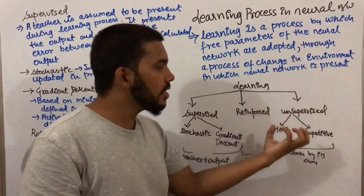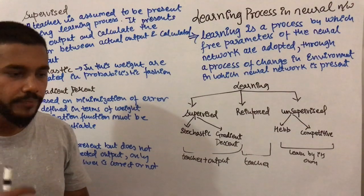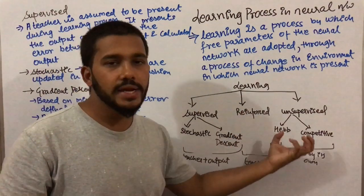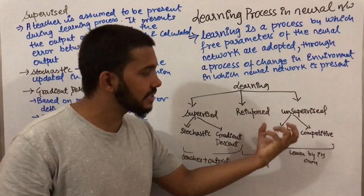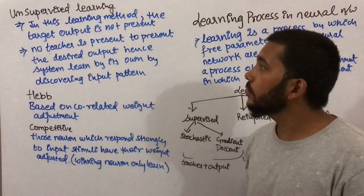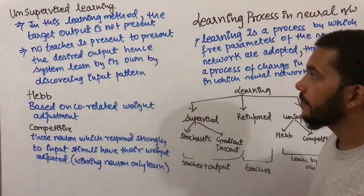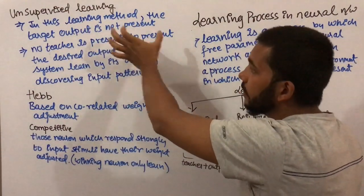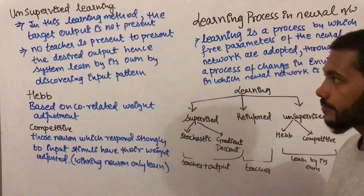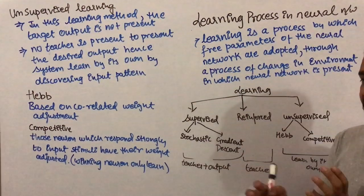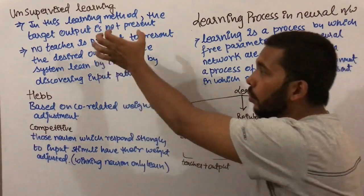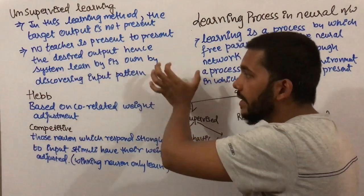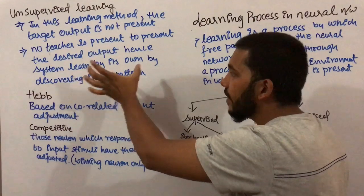In unsupervised learning there is no teacher present in the environment — the system learns on its own. The target output is not present; no teacher is present to provide the desired output. Hence the system learns by itself by discovering input patterns.